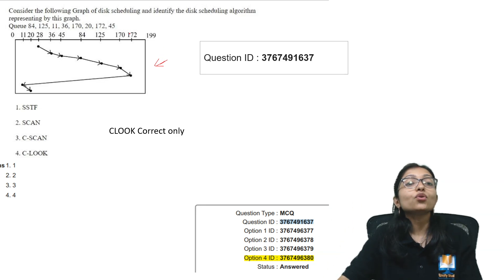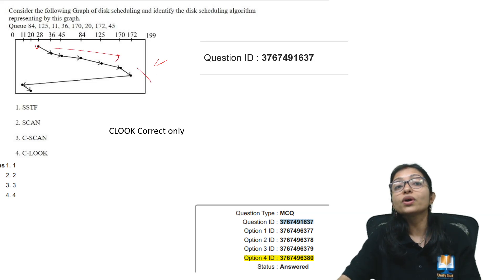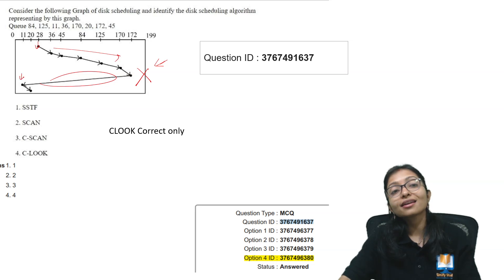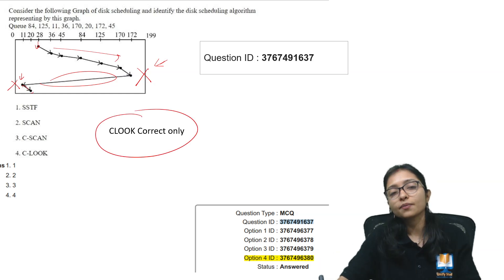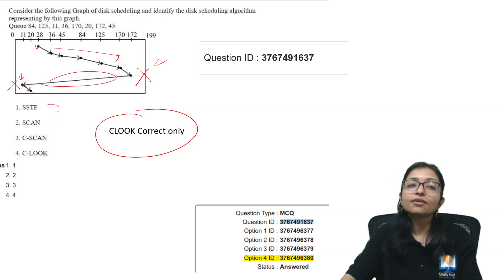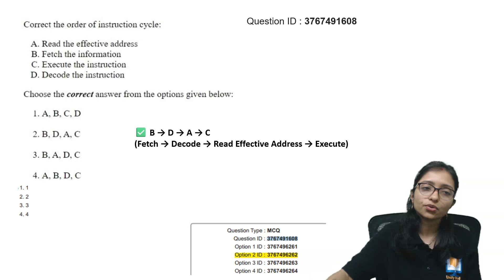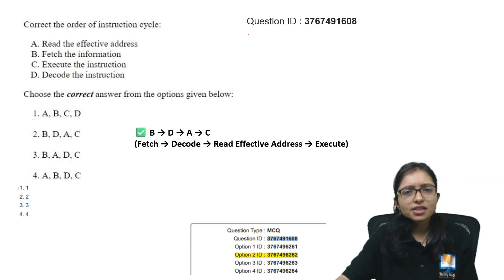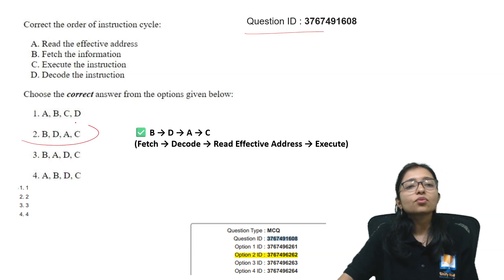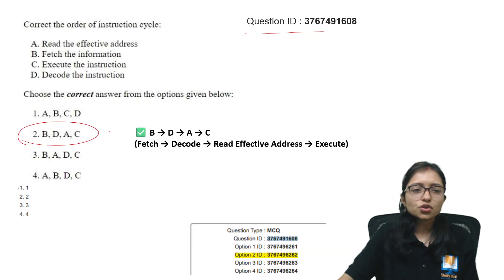Everyone knows C-LOOK, but they gave a diagram and asked you to identify the type from it. You have to be very sure: in C-LOOK, we start from the head, go in one direction — not going all the way to the end — then come back to the other end, not going to the last service, giving service only up to that point. That's C-LOOK. Identifying the option from just the diagram was a little bit tricky, and that's why some students got confused here.